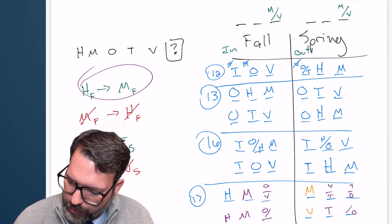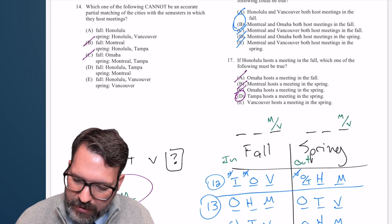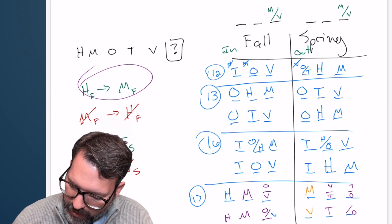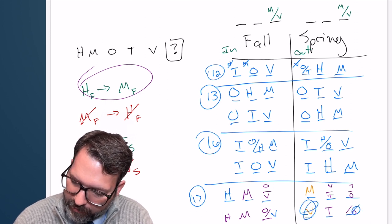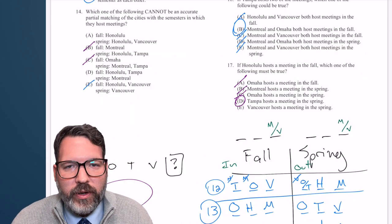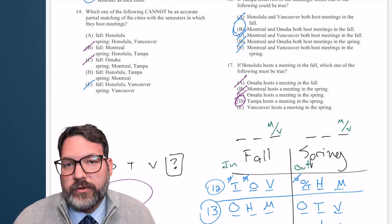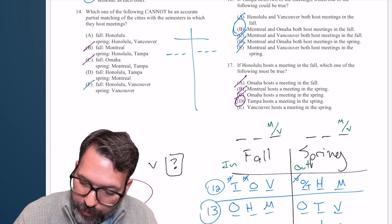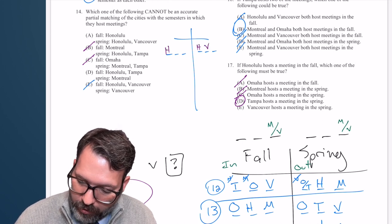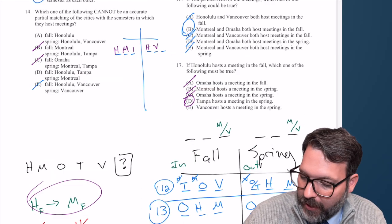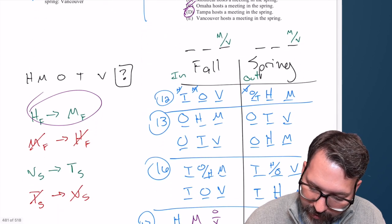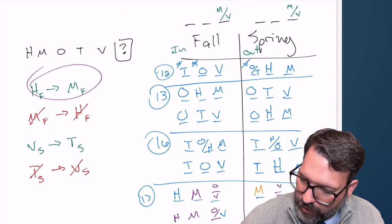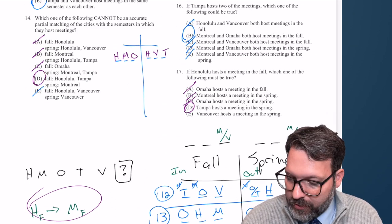Answer D — H, T in the fall, M in the spring — haven't seen that, so I'll keep D. Answer E — H, V in the fall, and then V in the spring — we could have done H, V in the fall with V, T, O in the spring, so cross off E. Now I just pick between A and D. Testing A: if H is in the fall, M is in the fall, that covers the M/V placeholder; V in the spring means T is in the spring, O fills the last spot. So H going twice is possible — cross off A. The answer must be D.